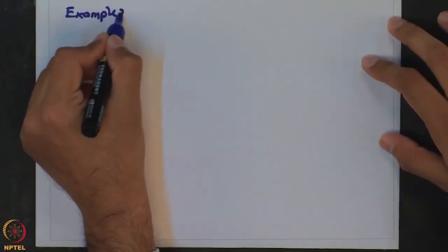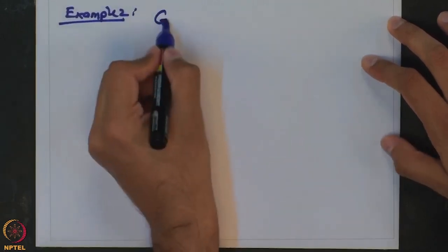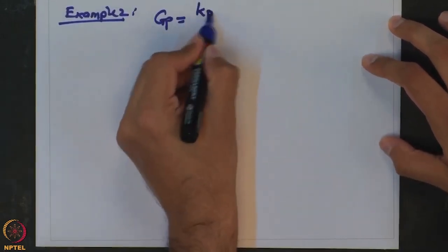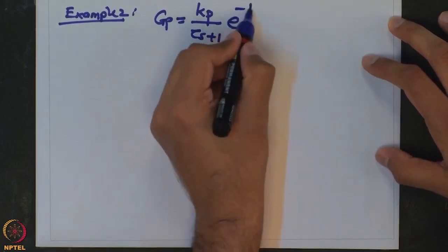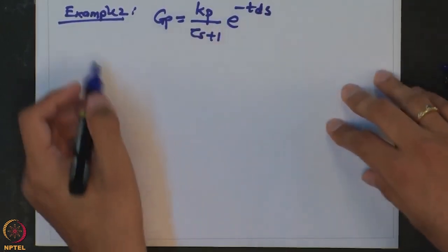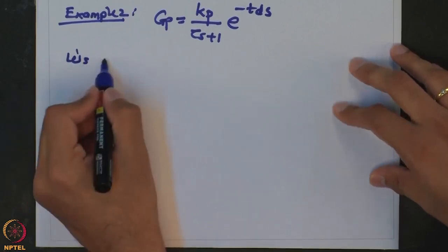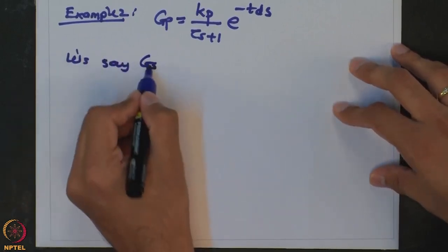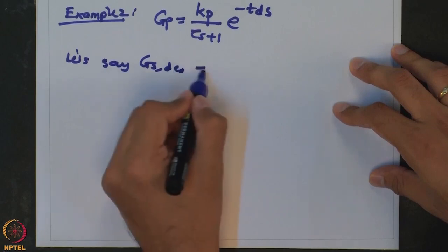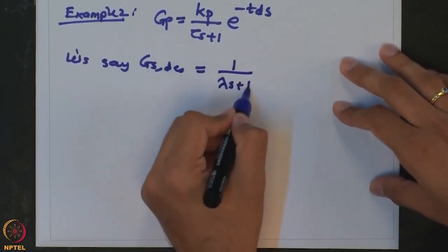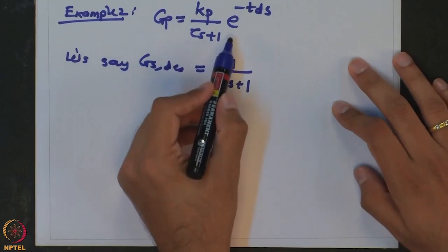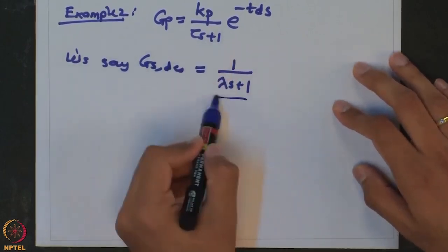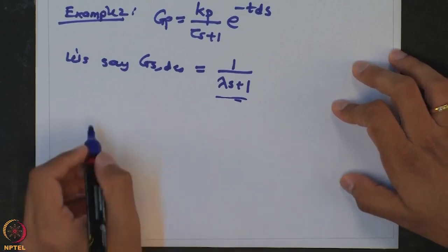This is a simpler way to get controller tuning by specifying the desired closed loop response. Let us take another example where our process has a dead time — a first order plus dead time process. Let us say we want Gs_desired to again be 1 over (λs + 1), i.e., we have dead time in the process but we want a response without any dead time. Let us see what happens.